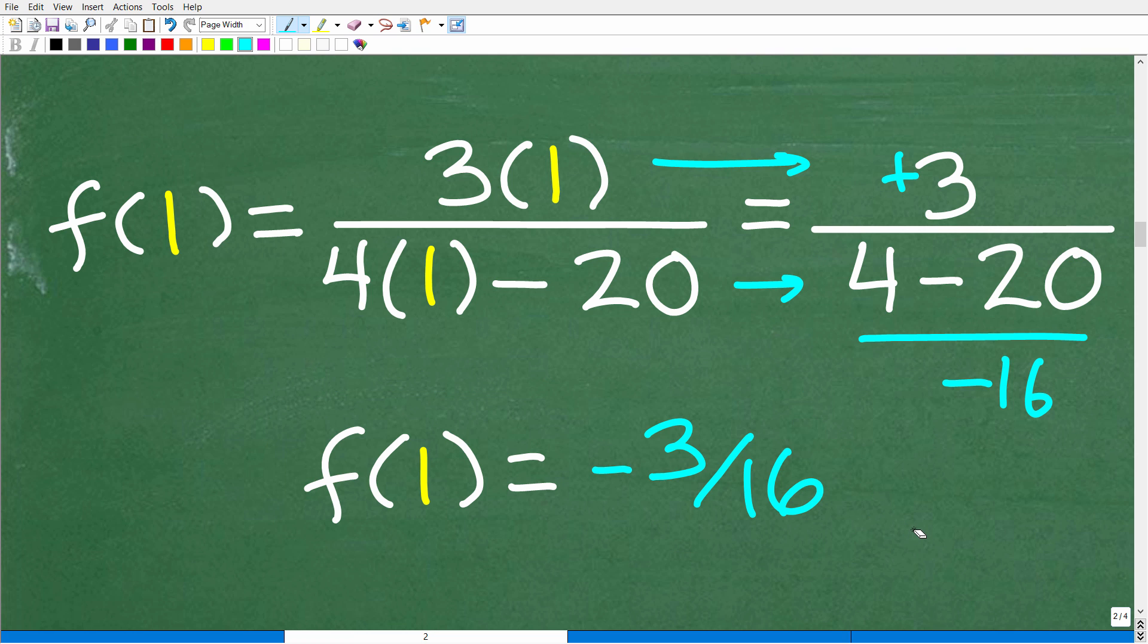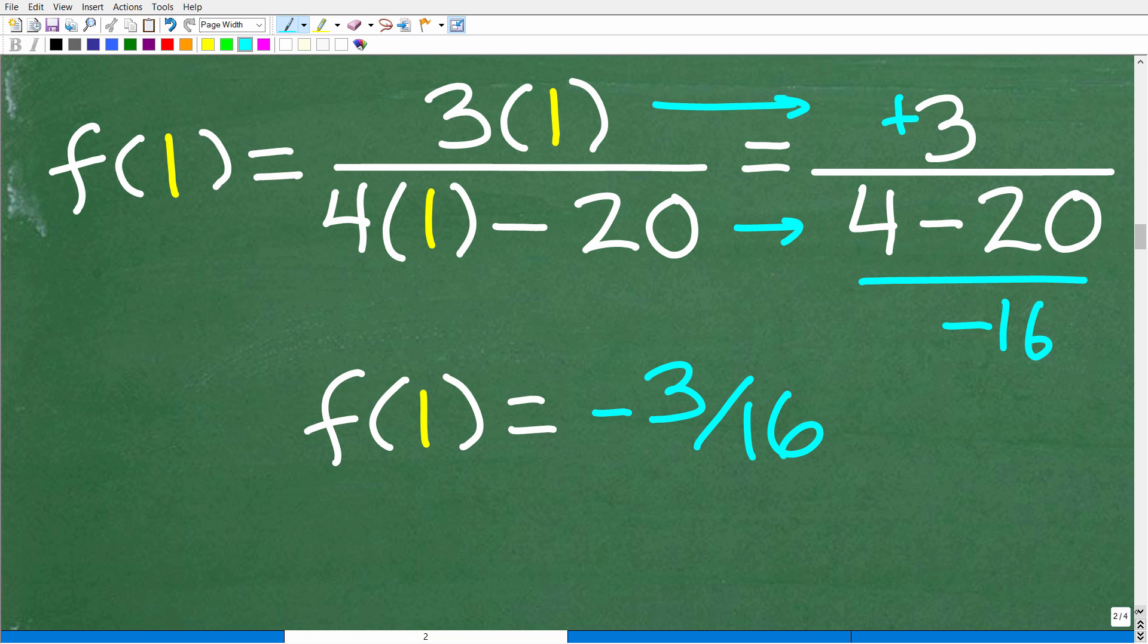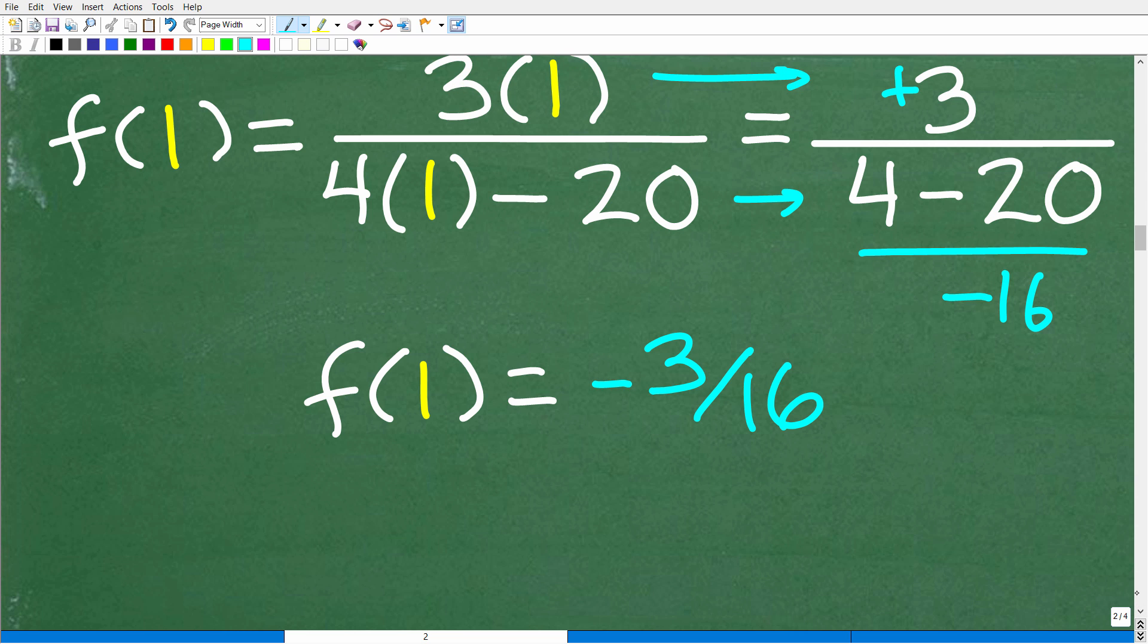Okay, so let's just make a couple quick observations here. Now, we were able to plug in the value of 1 into this function. So we're able to plug in 1, and we got an actual number out. So that's really good. That's what we hope to happen in a function. So this means that 1 is part of something called the domain.